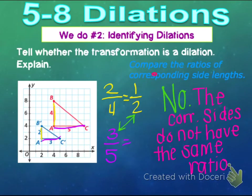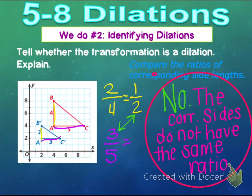For something that doesn't match up, you would say: no, because the corresponding sides do not have the same ratio. You don't have to list what those ratios were — just the fact that they don't match.